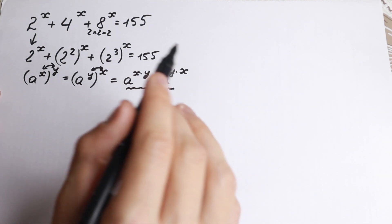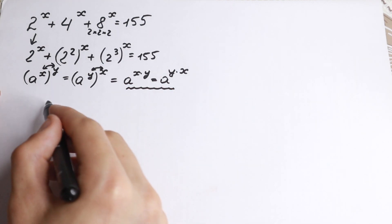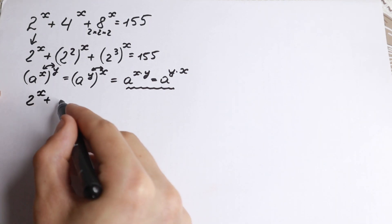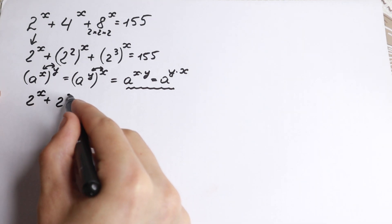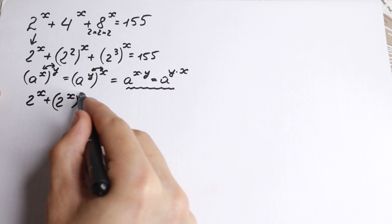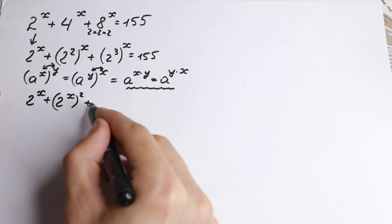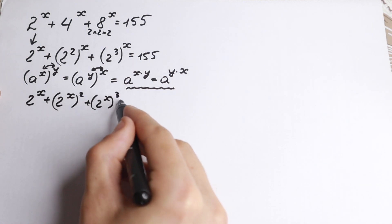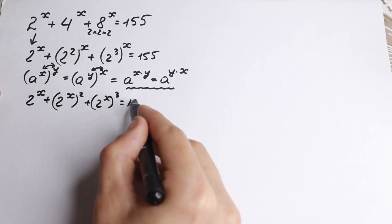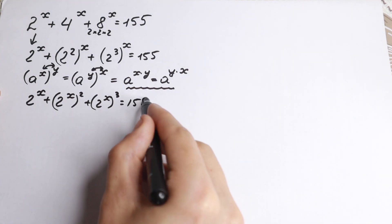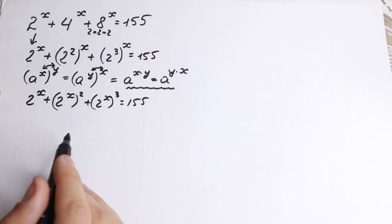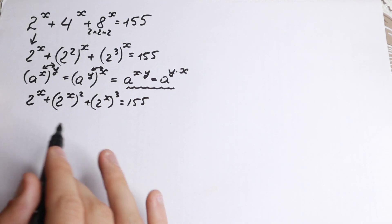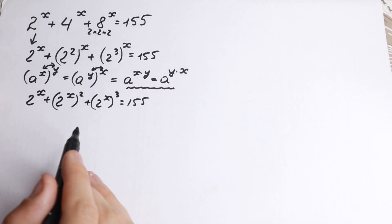Applying this rule of interchange, we can rewrite our equation as: 2 to the x, plus 2 to the x squared, plus 2 to the x cubed, equals 155.